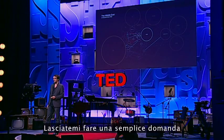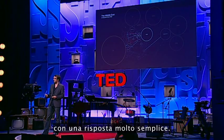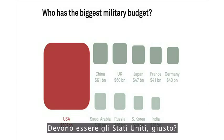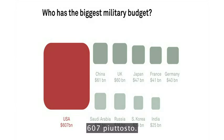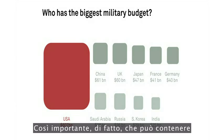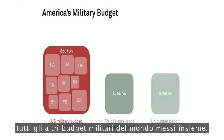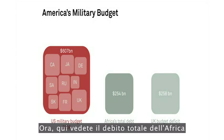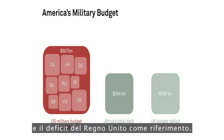Let me ask you a simple question with a really simple answer. Who has the biggest military budget? It's got to be America, right? Massive — 607 billion in 2008. So massive, in fact, that it can contain all the other military budgets in the world inside itself. You can see Africa's total debt there and the UK budget deficit for reference.